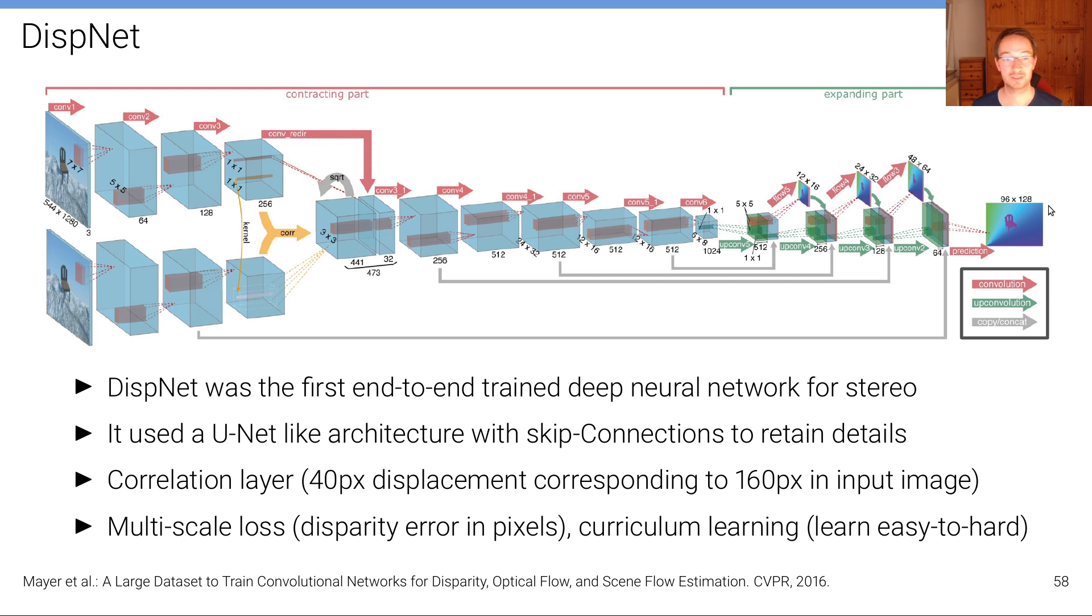And in the end, we obtain directly, we directly predict or regress a disparity map using this, and this is trained end-to-end. There is no global optimization introduced in the end, it's all trained from very large amounts of data.